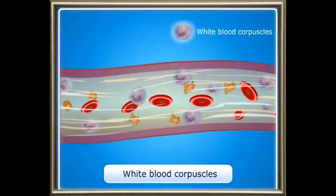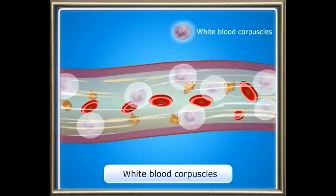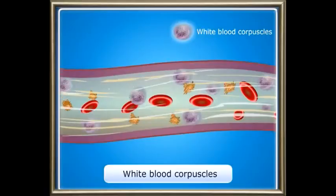White blood corpuscles are of different shapes. There is no haemoglobin in them; hence, they are white in colour. They attack different disease-causing organisms that enter our body and give us immunity. They live for just 12 days.